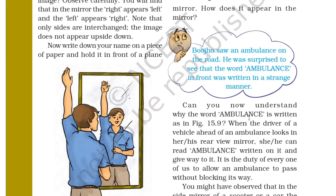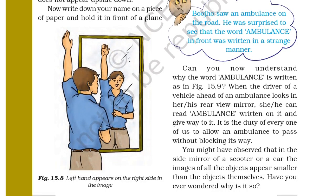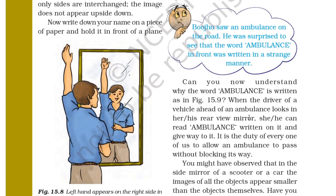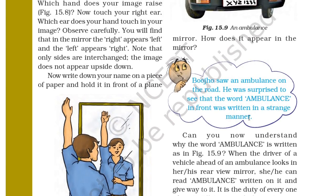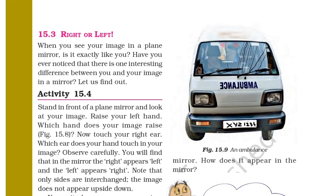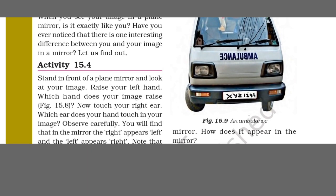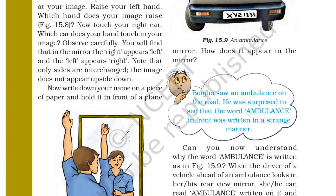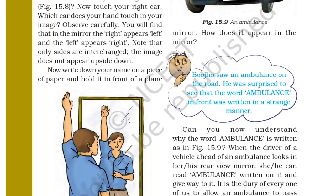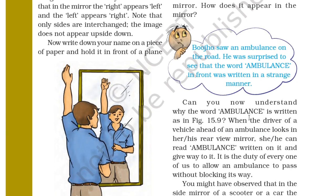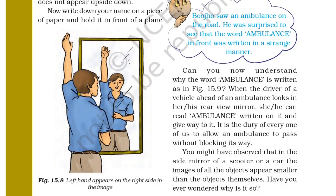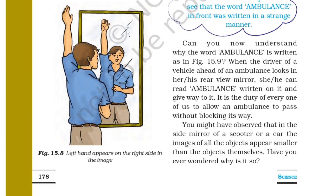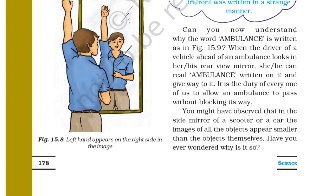Now write your name on a piece of paper and hold it in front of the plain mirror. The student is raising his left hand, and in the mirror his right hand is raised. How does your name appear in the mirror? You can see an ambulance — the word 'ambulance' is written in a reversed manner on the front of the vehicle so that the driver ahead, looking in their rear view mirror, can read it correctly and give way to the ambulance.